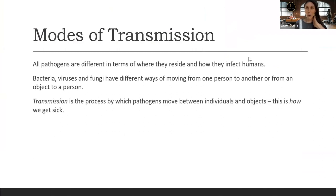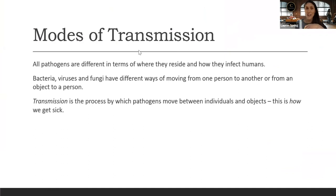We know already that pathogens are different in terms of where they reside and how they infect humans. Bacteria, viruses and fungi have different ways of moving from one person to another or from an object to a person. Transmission is the process by which these pathogens move between individuals and objects — this is essentially how we get sick.